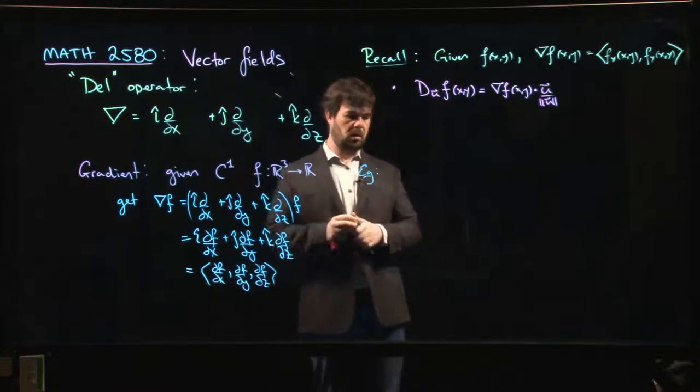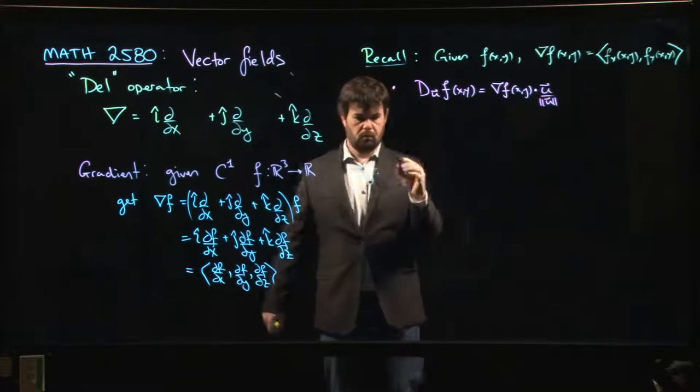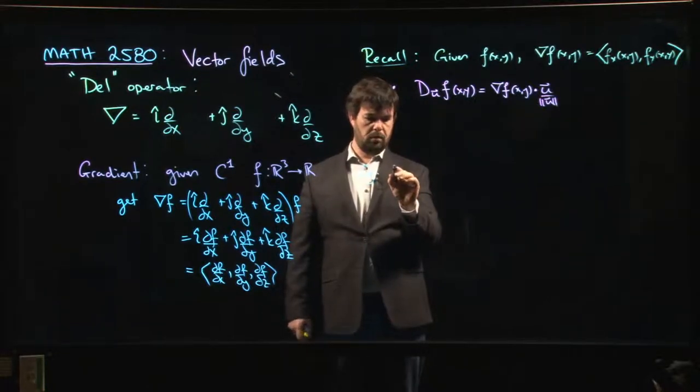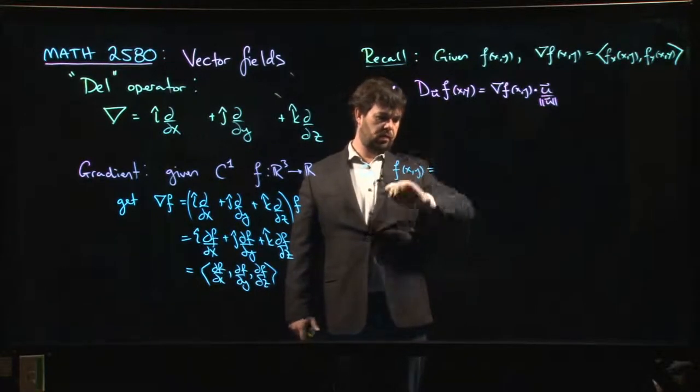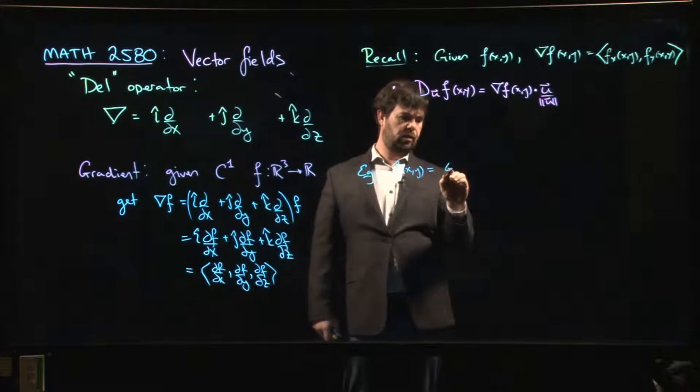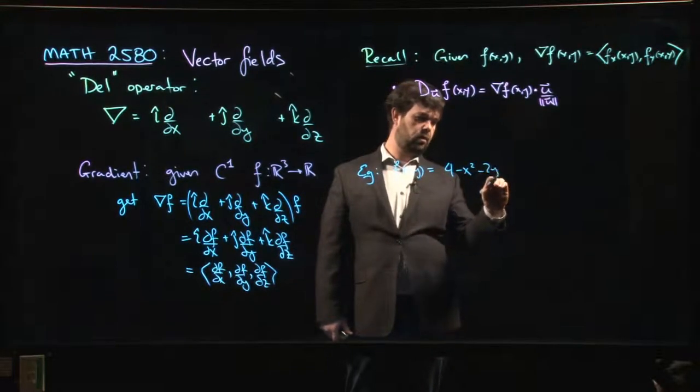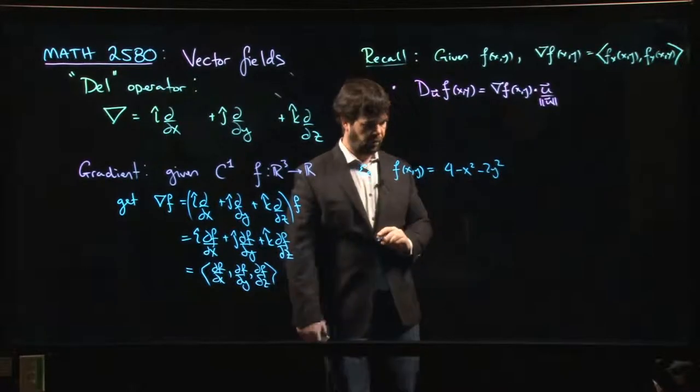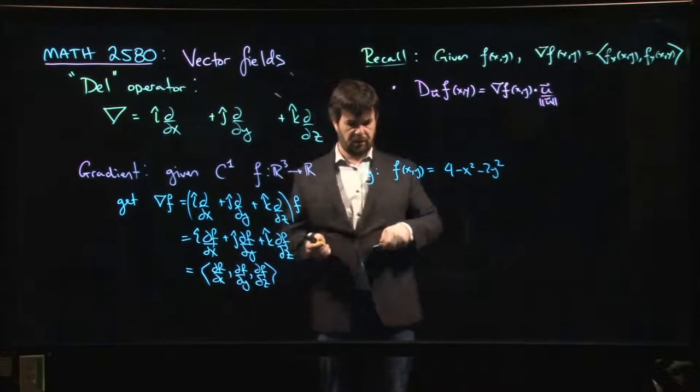Let's say we do something like f(x,y) = 4 - x² - 2y², something like that. So if you were to graph this thing, think about the three-dimensional graph...